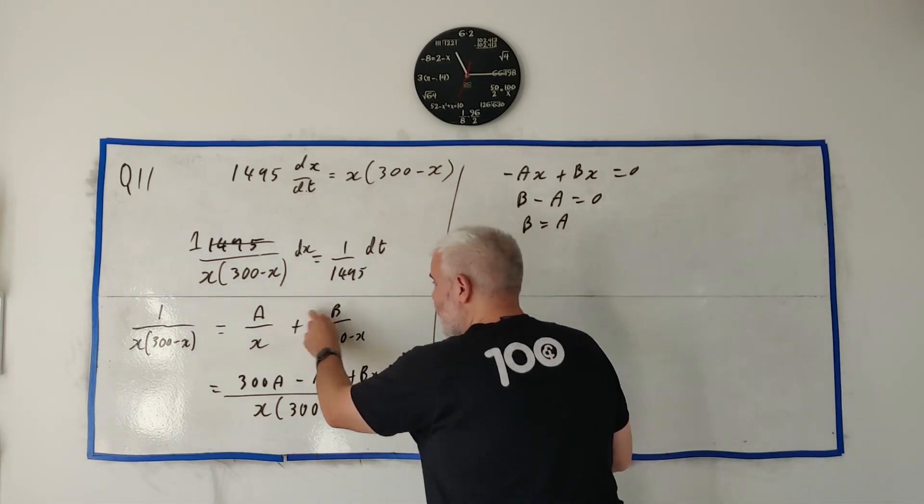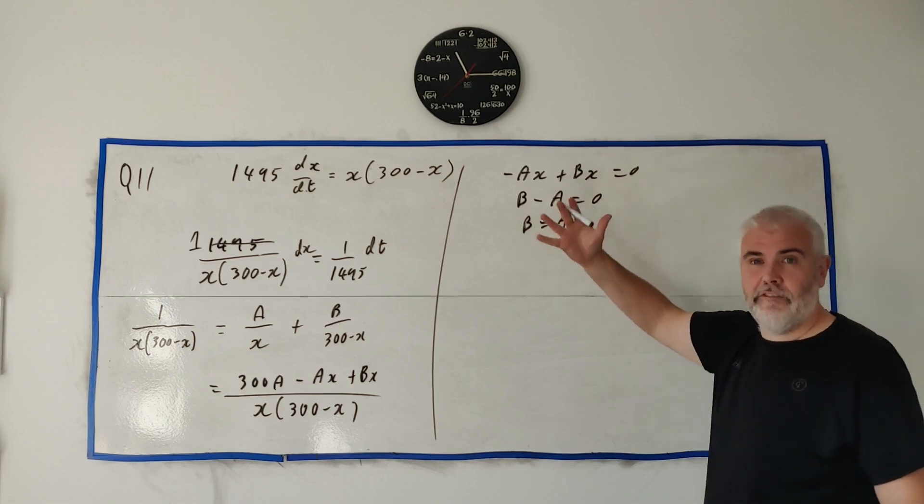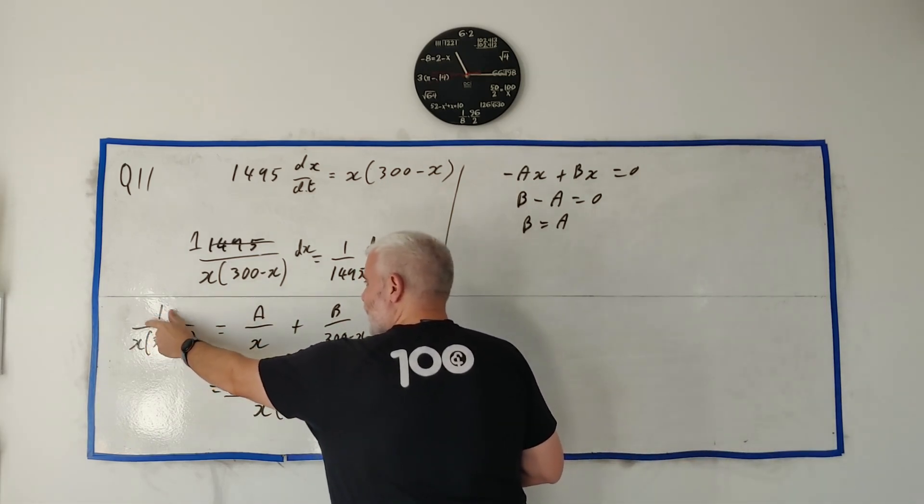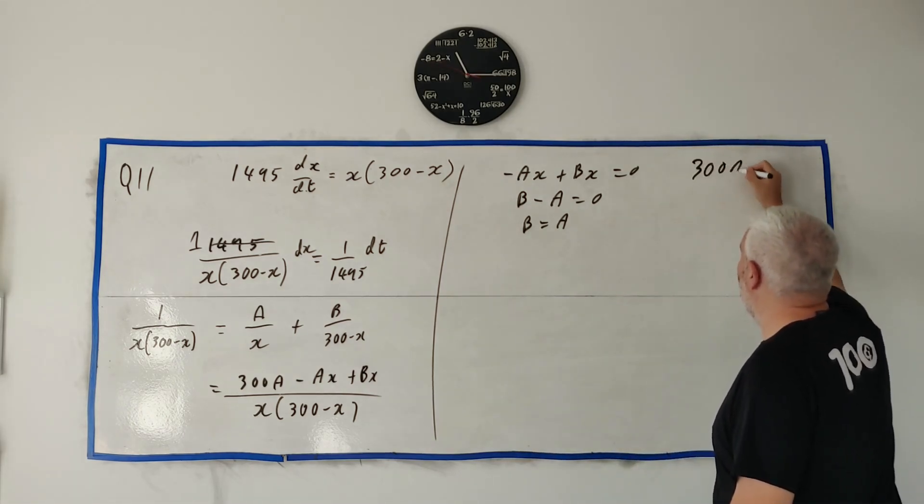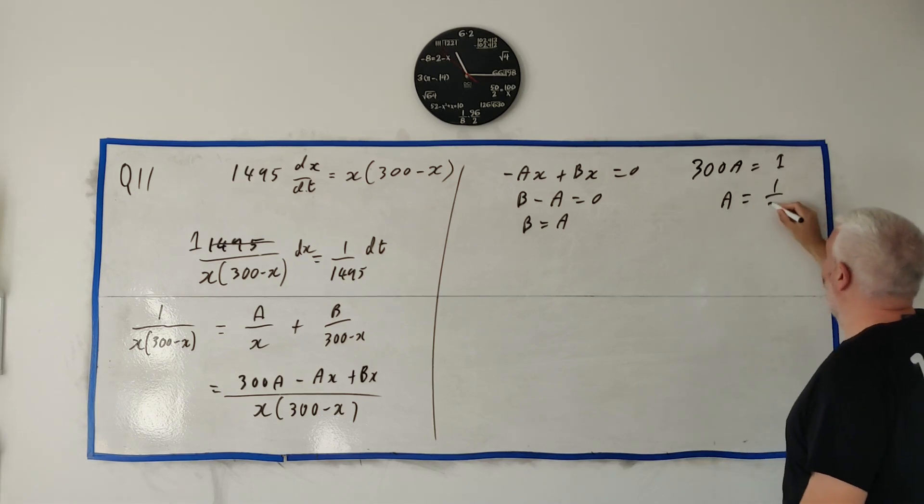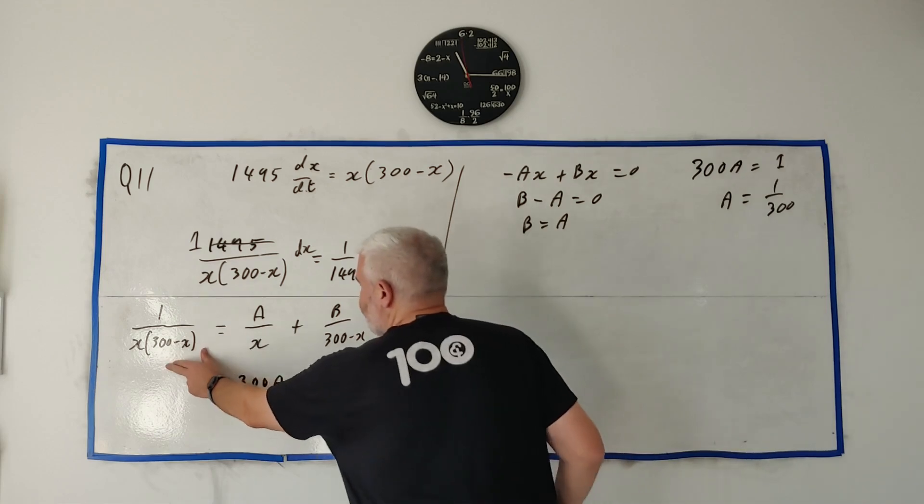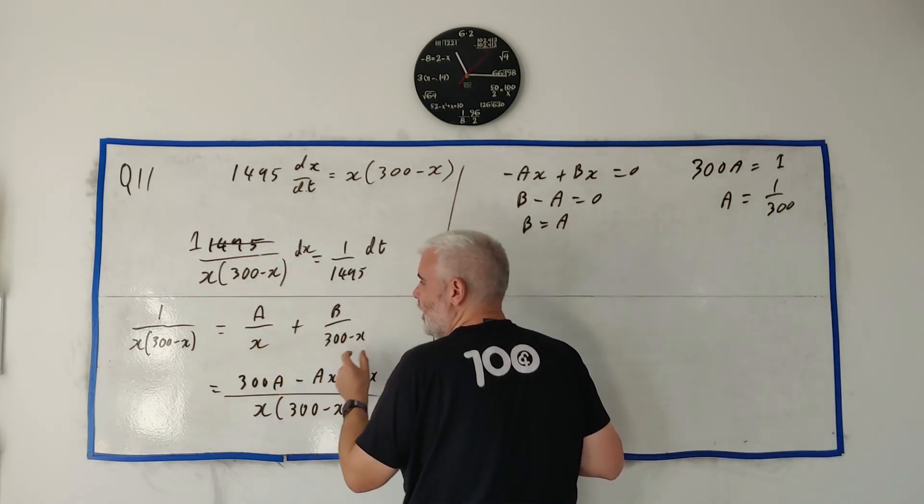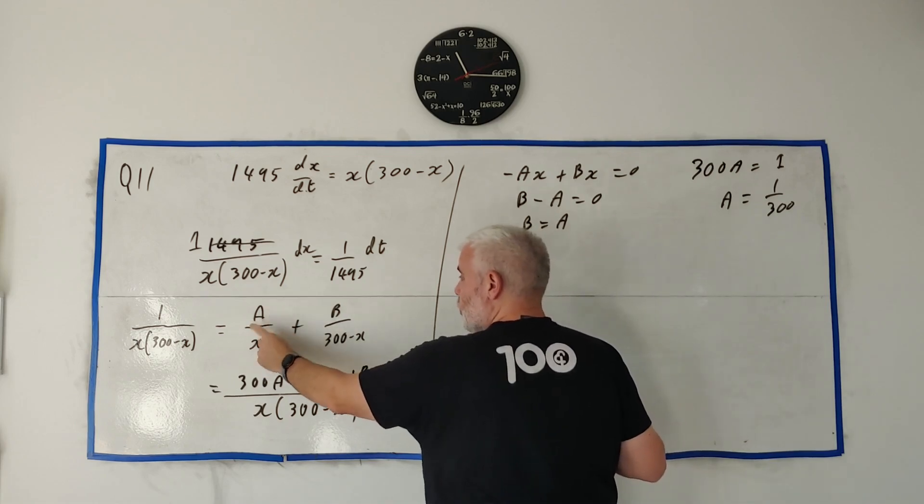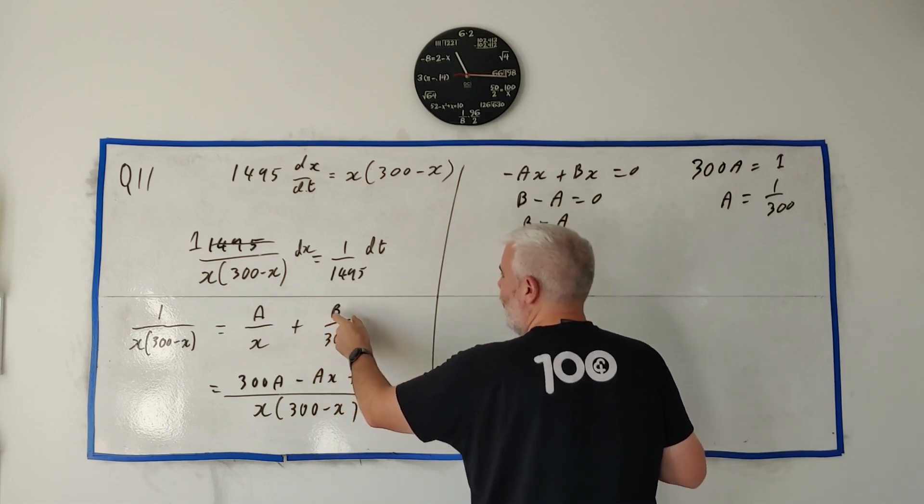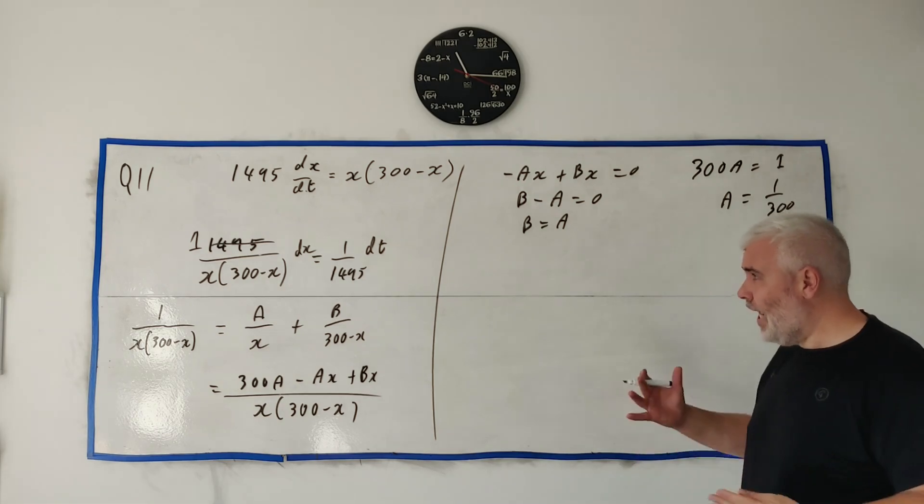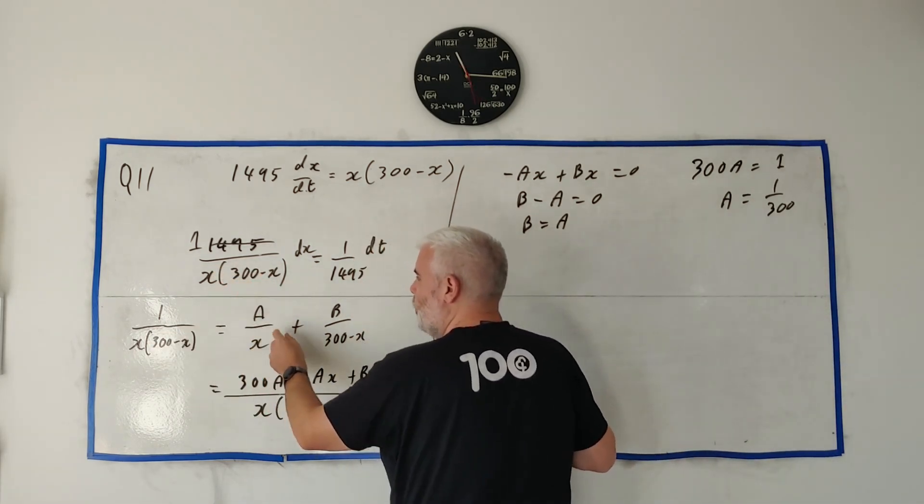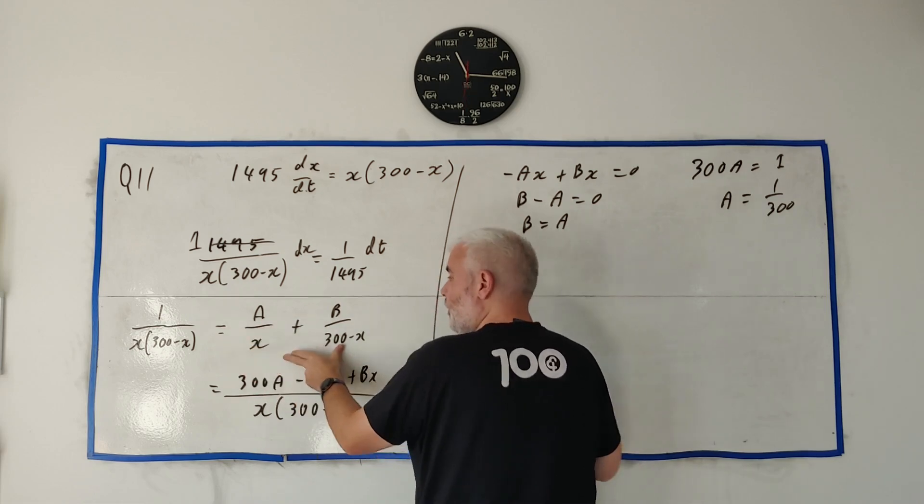So, whatever we find out a is, b is as well. So, that's one half of a simultaneous equation. The other bit of information we have here is everything without an x. 300a must equal everything without an x here, which is 1. So, we also know 300a must equal 1. That's simple. a is equal 1 over 300. So, instead of 1 over x multiplied by 300 minus x, we can put in 1 over 300 over x plus 1 over 300 over 300 minus x. And that will be a little easier to integrate.